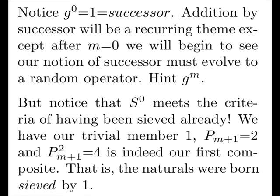But notice that S0 already meets the criteria of having been sieved. We have our trivial member 1, our next prime is 2, that squared is 4, and everything less than that is prime. That is, the naturals were born, sieved by 1.